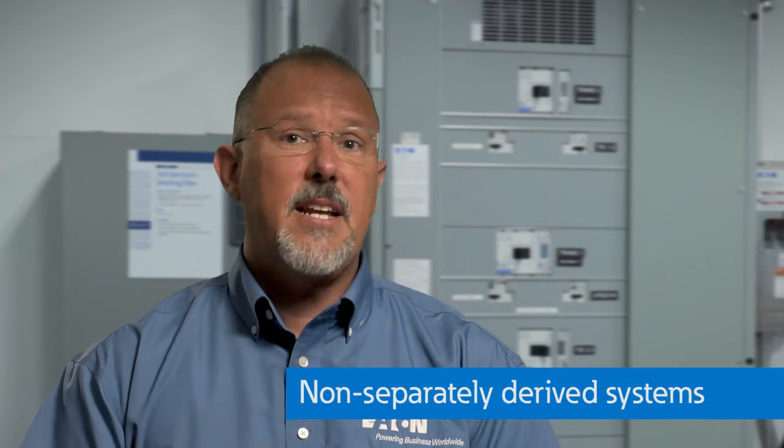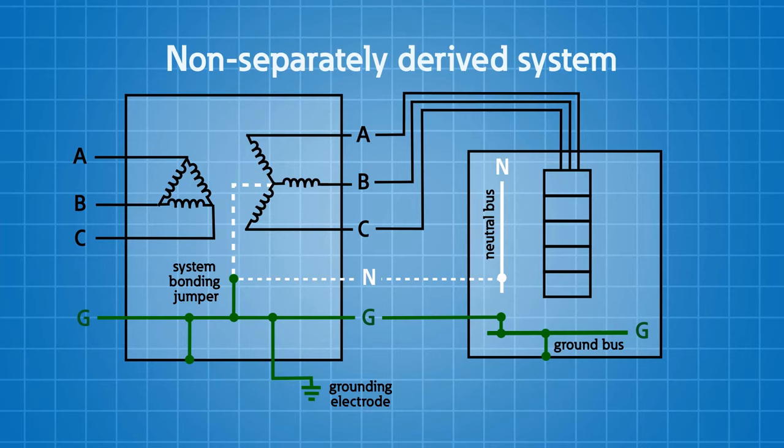Now we've established what a separately derived system is, and depending on how you bond things in the generator — whether you establish a separately derived system — that will drive the solutions you purchase and install. A non-separately derived system: good examples are your downstream panelboards, or a generator that doesn't have an established neutral-ground bond, where you're using a three-wire or three-pole transfer switch. In those cases you keep your grounded conductor separate from your equipment grounding conductors in all of those locations.